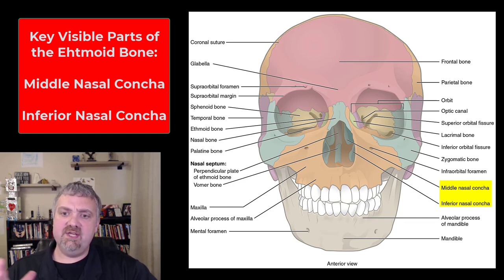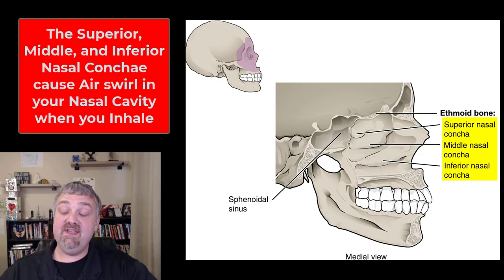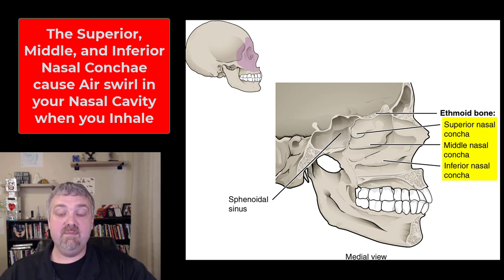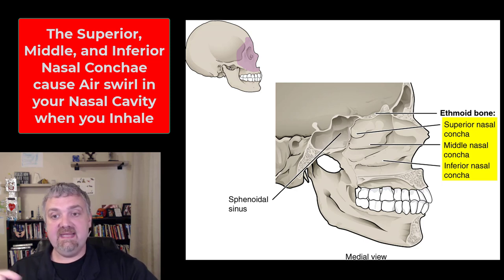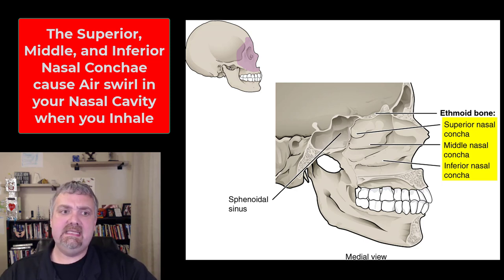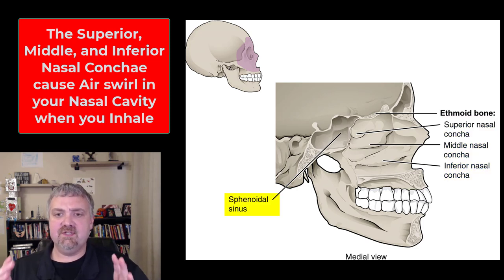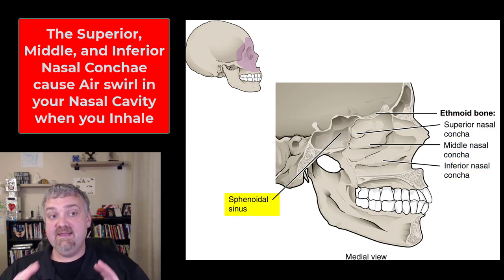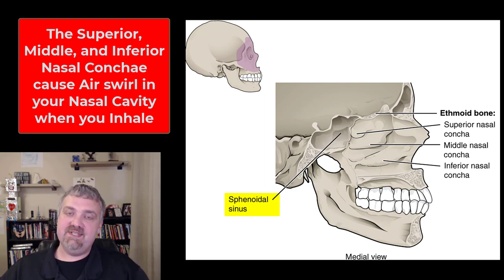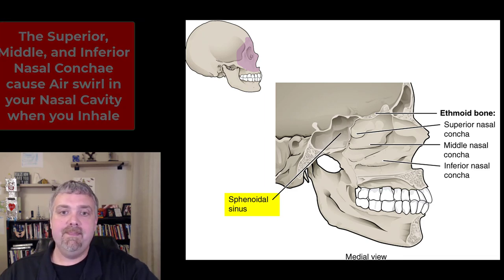Until we take the skull apart, you cannot see the superior nasal conchae, but you can see them here. So the superior, middle, and inferior nasal conchae of the ethmoid bone create these openings — these meatuses — that cause air to swirl when you breathe. You'll also notice the sphenoidal sinus inside the sphenoid bone; this is the best image to see it because it can't be seen unless the skull is taken apart.